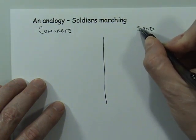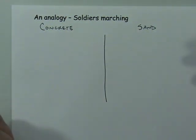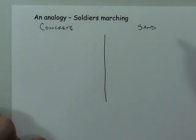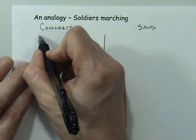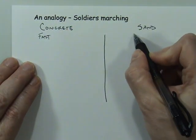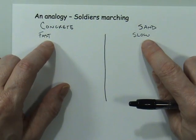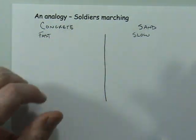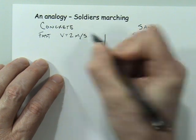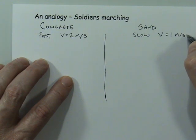We can all appreciate that when you walk in sand, it is very difficult to move — you walk much more slowly. Even running in sand is not as fast as running on concrete. So for our purposes, concrete means the soldiers will travel very fast, and in the sand, the soldiers will travel very slowly. To put some numbers on this: the fast velocity is two meters per second, and the slow velocity is one meter per second.